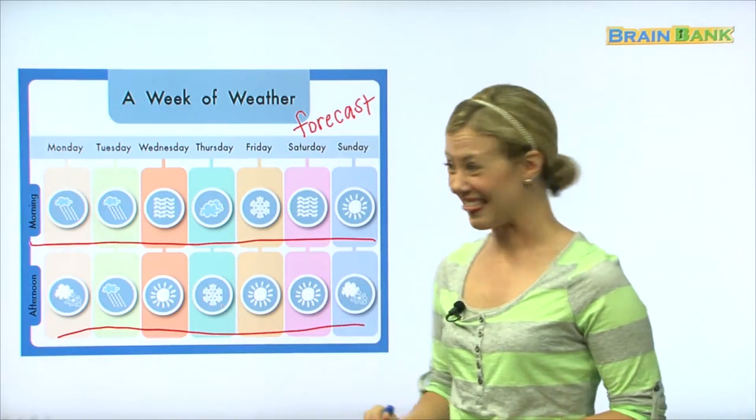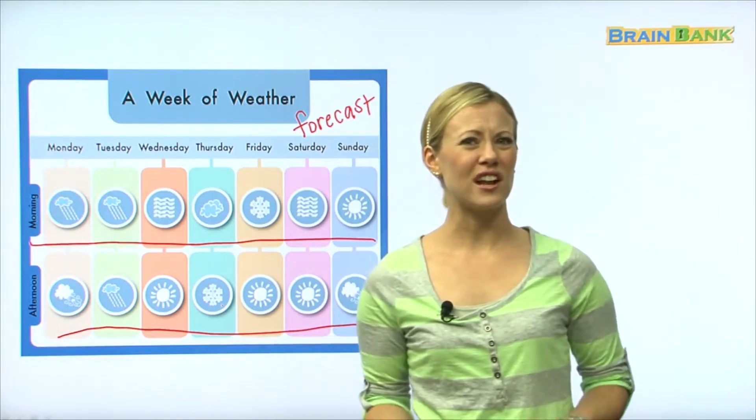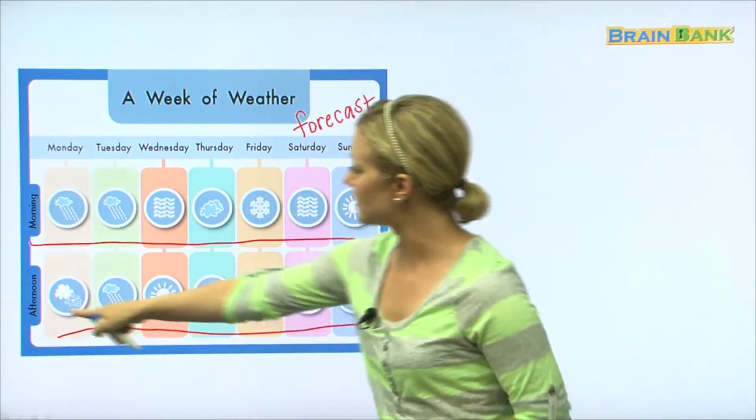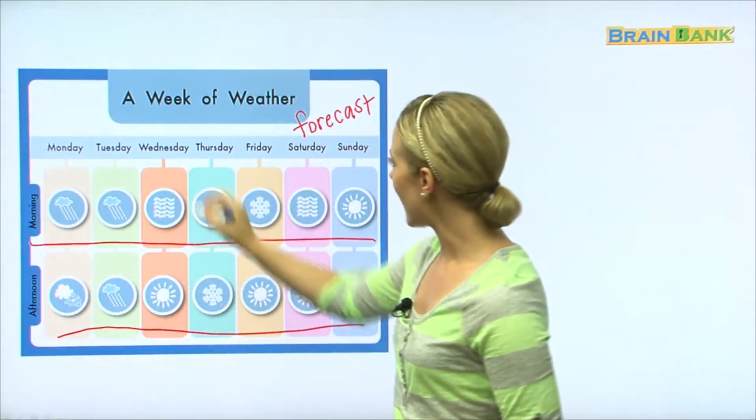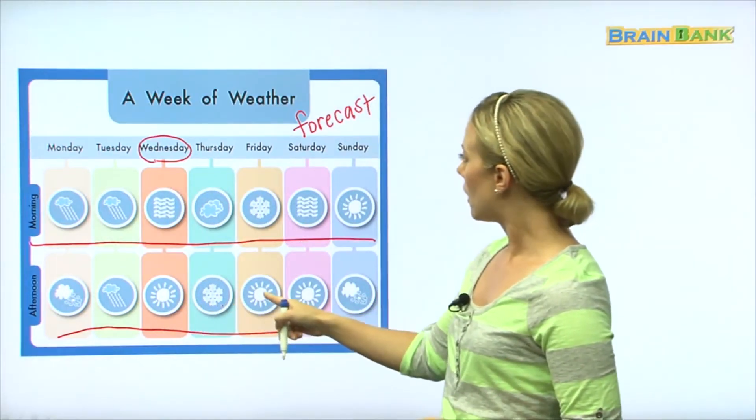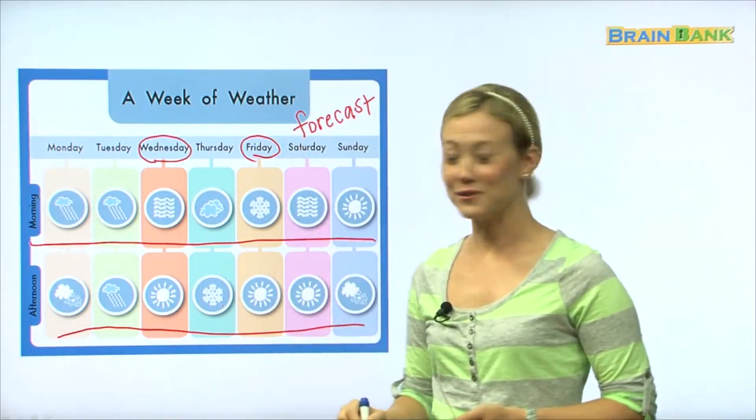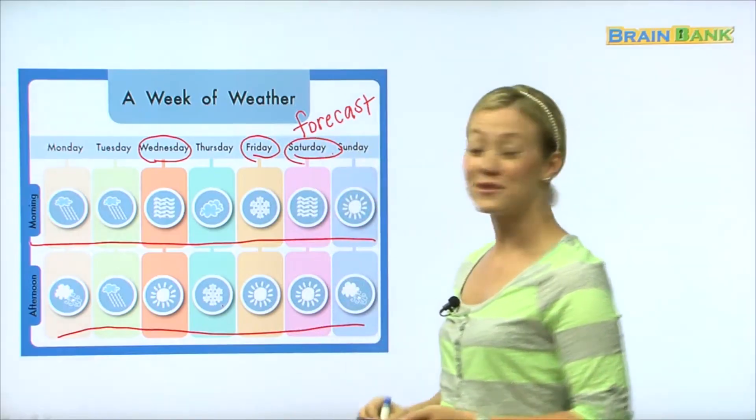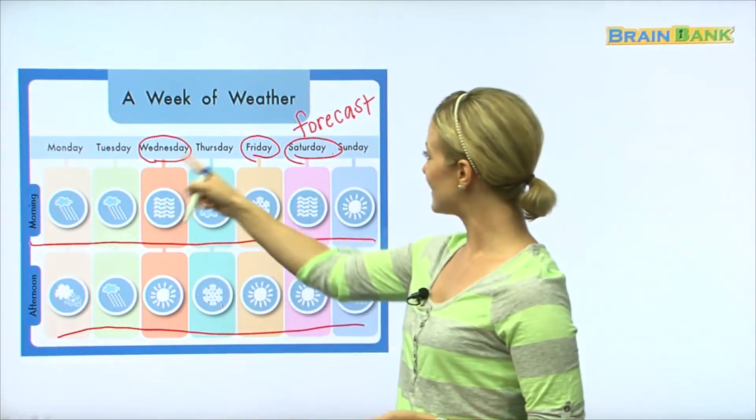When should I go on my picnic? I want sunny weather, so when should I go? Ah, here's sun in the afternoon. What day is this? Wednesday. I could go on my picnic on Wednesday. Or let's see, Friday is also going to be sunny weather in the afternoon. And oh, one more day, Saturday. I could also go on Saturday. So if I want to have a picnic I should go Wednesday, Friday, or Saturday because I like sunny weather.